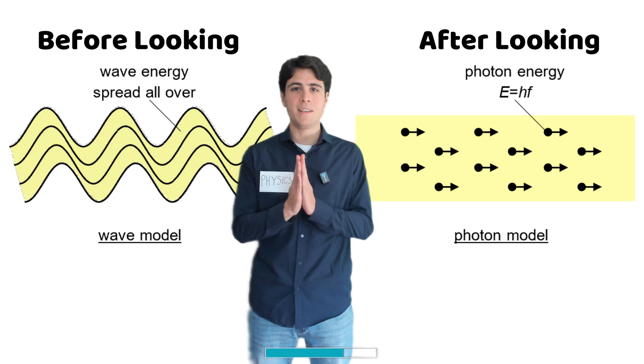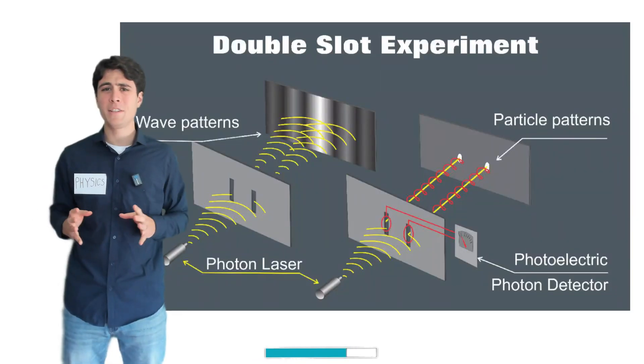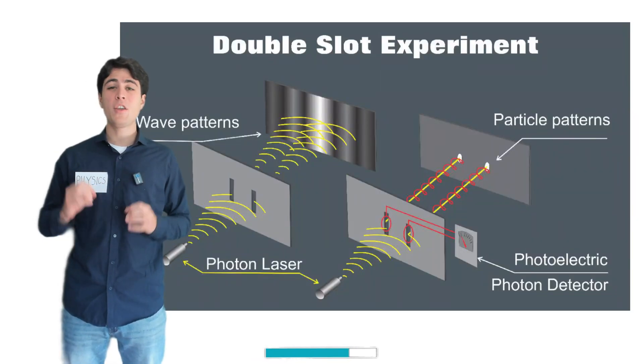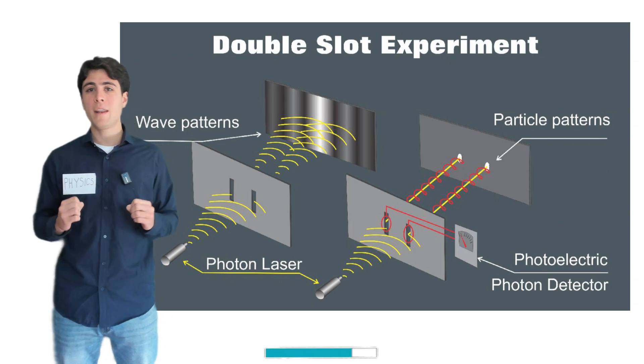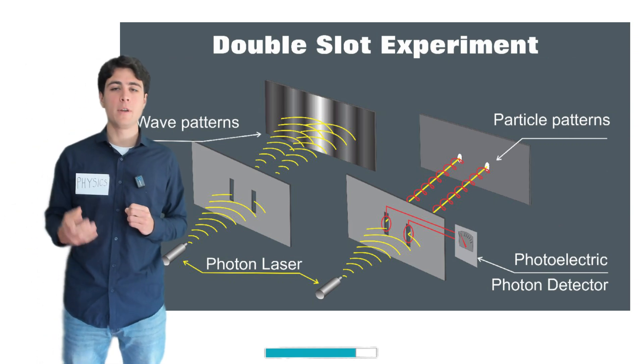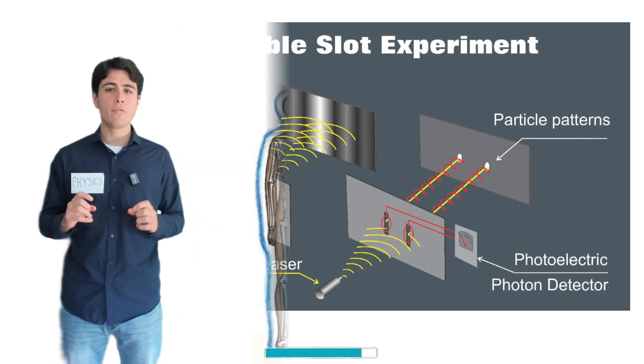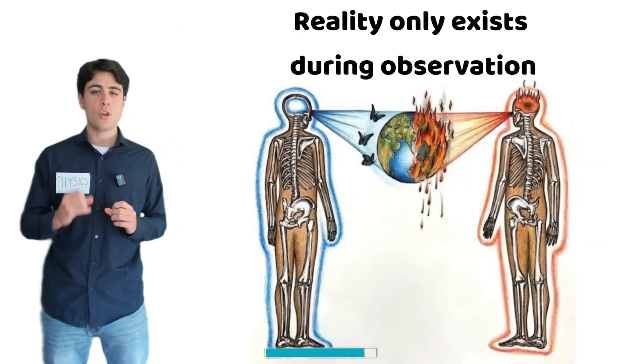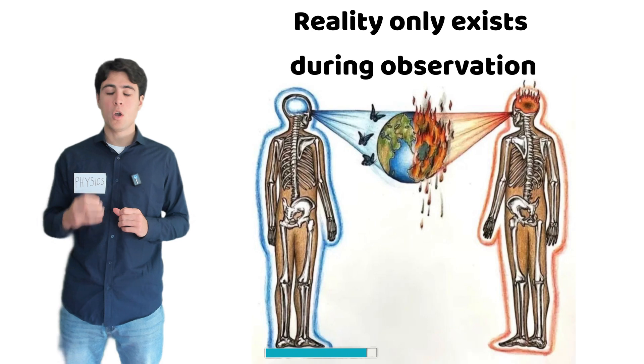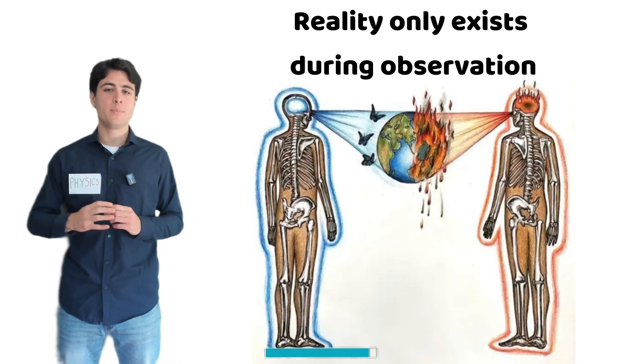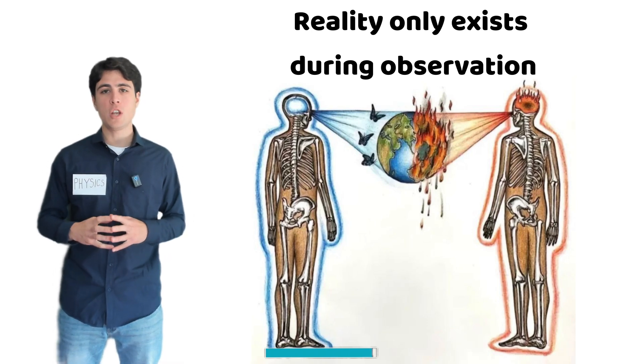Sounds like science fiction, right? But this is a real phenomenon that has been repeatedly confirmed by experiments. And it hints at something profound. What if reality only exists when we observe it? What if our consciousness is playing a direct role in shaping the reality we see around us?